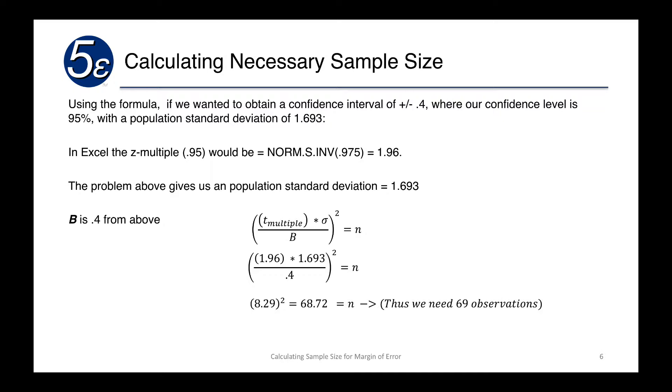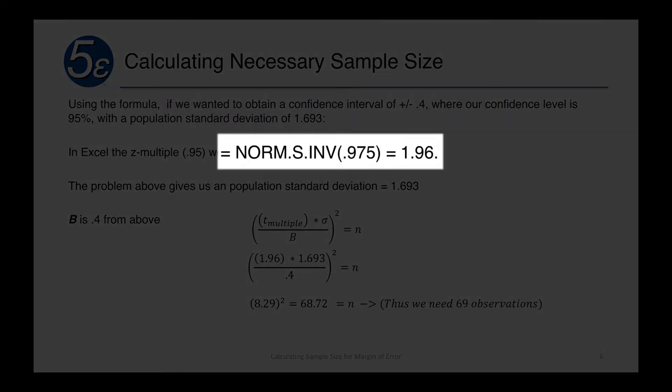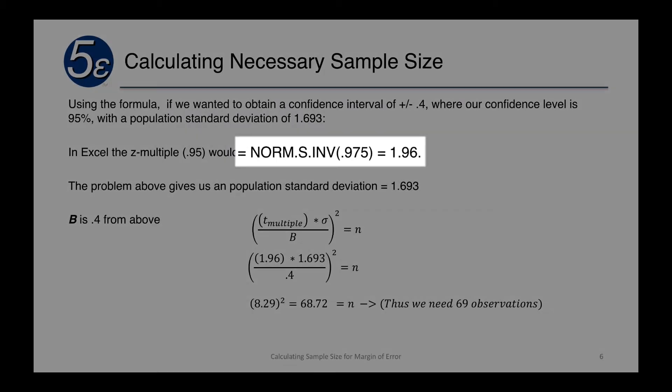We take our z multiple and we put in the confidence level of .95. Now remember, since this is 2 tails, we're going to divide the difference by 2 and we're going to make it .975. And this will give us 1.96.